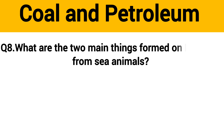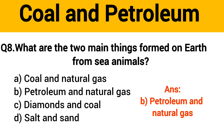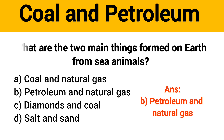Question No. 8. What are the two main things formed on Earth from sea animals? The right answer, Option B: Petroleum and Natural Gas.